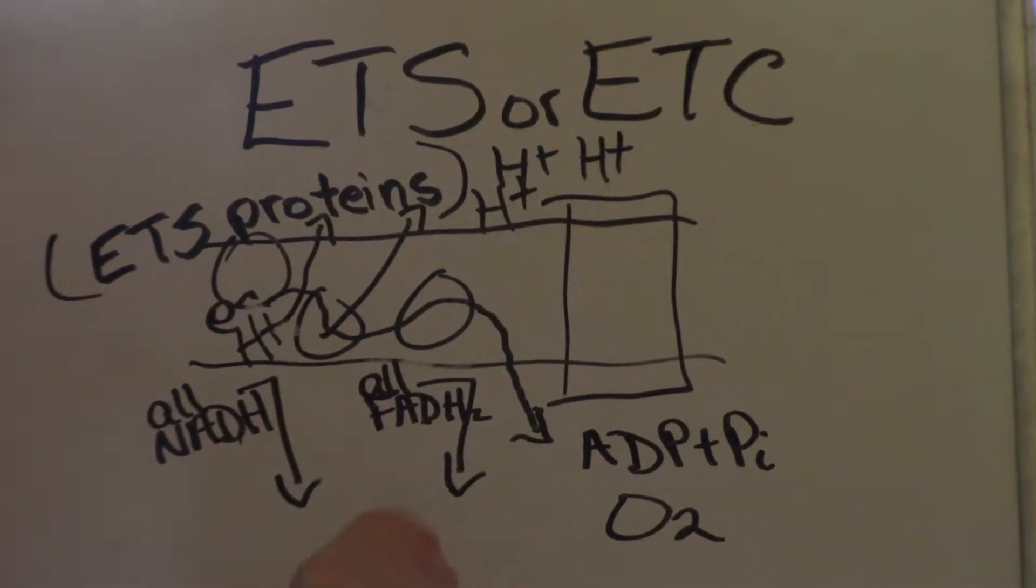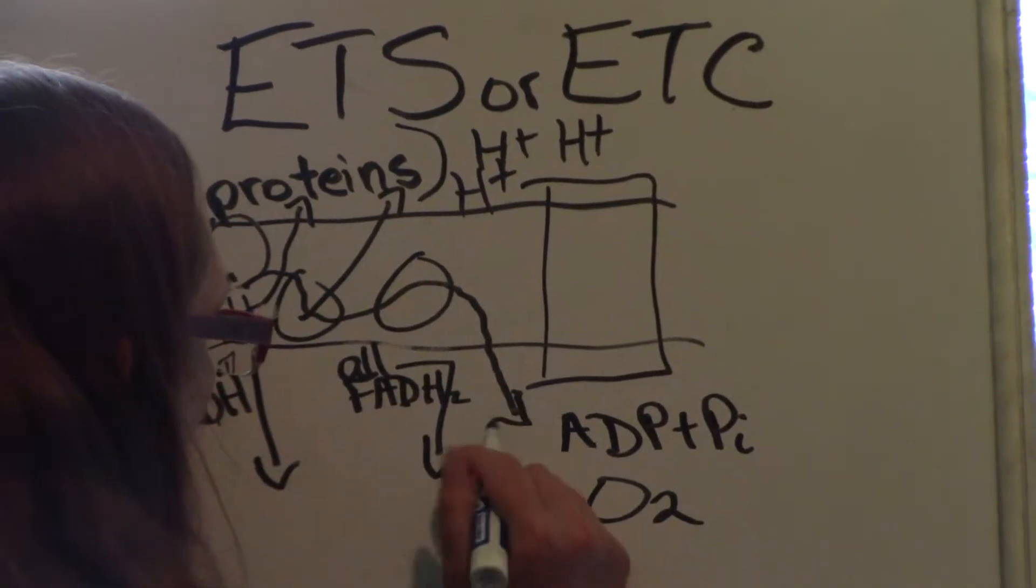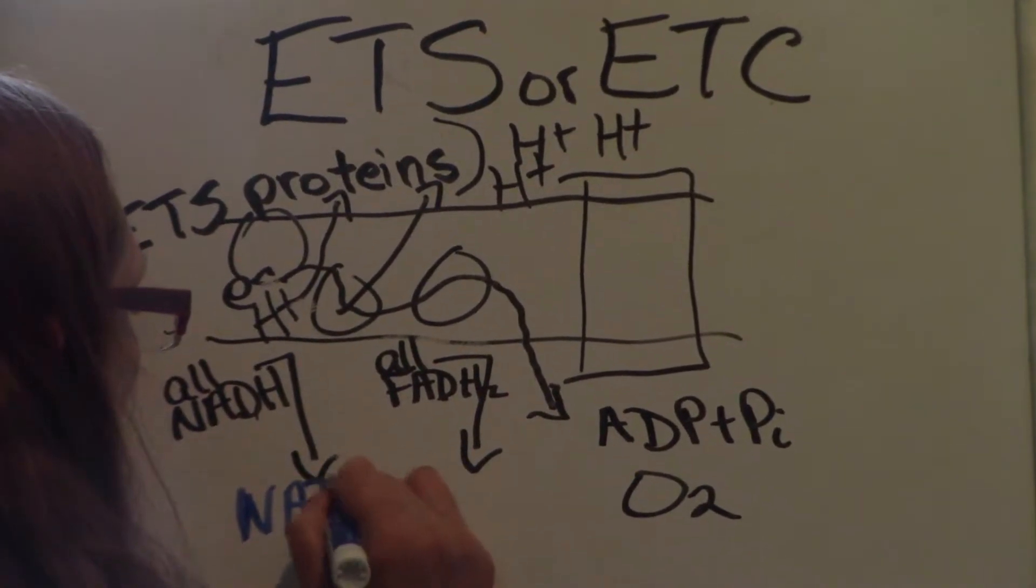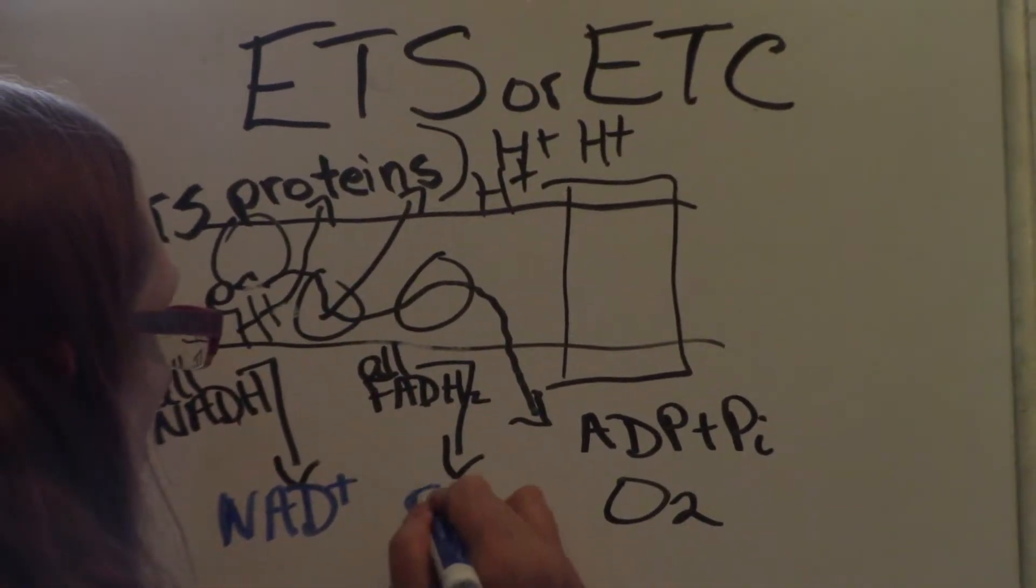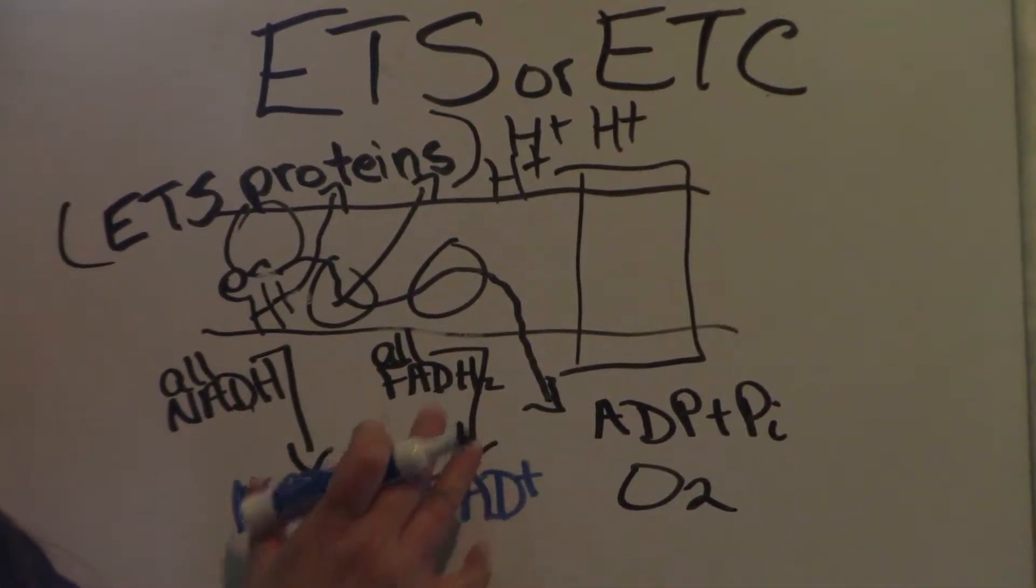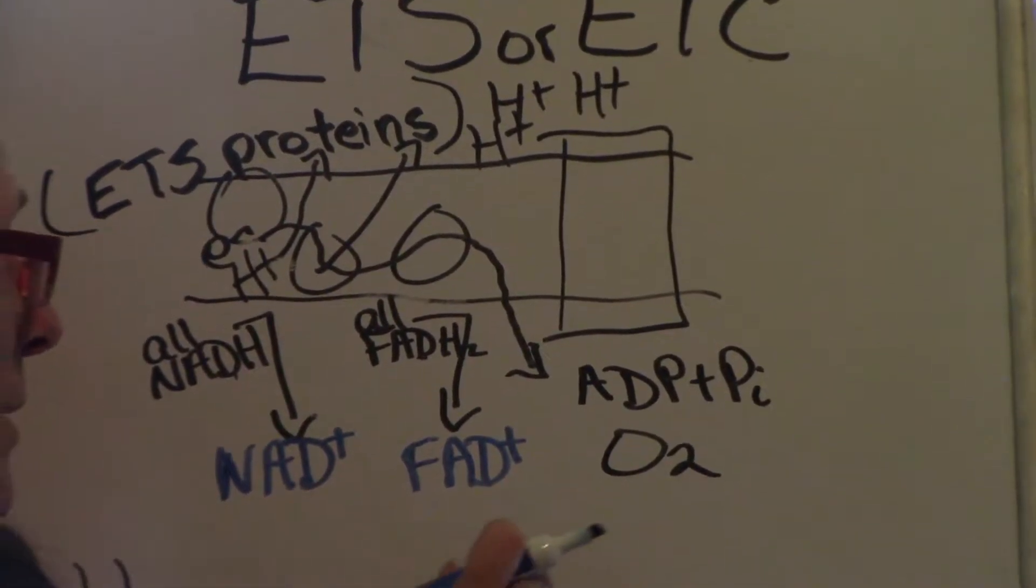At the end of the electron transport chain, once the taxis have given up their passengers, they're back to this. So now that's the end, an end product.